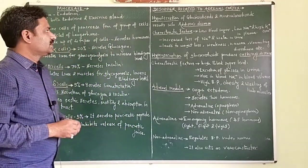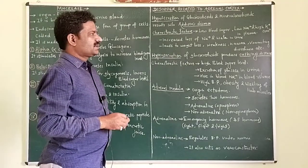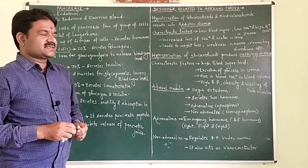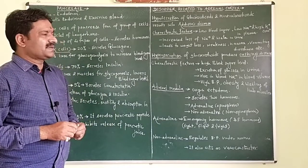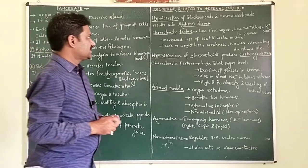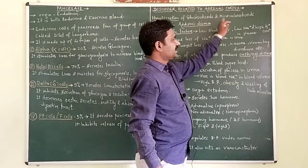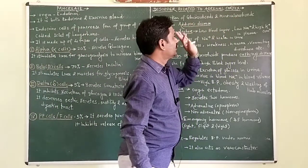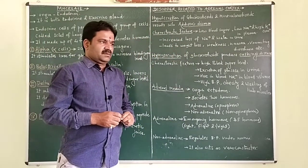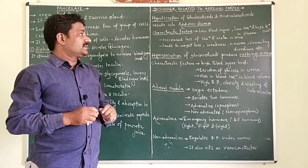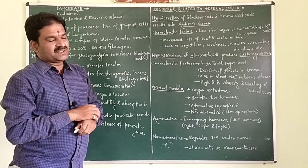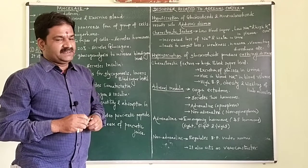Hello students, today we will see the disorders related to the adrenal cortex. Last time we have seen the hormones of adrenal cortex — it secretes two types of hormones: glucocorticoids and mineralocorticoids. We have already studied the different functions of these two hormones.